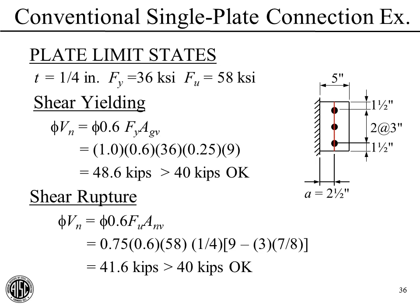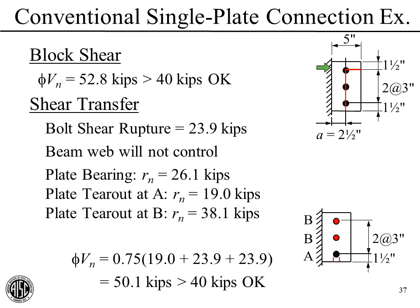Moving on to block shear: going through our calculations for this failure surface, we get 52.8 kips, which exceeds 40 kips. So block shear is okay.